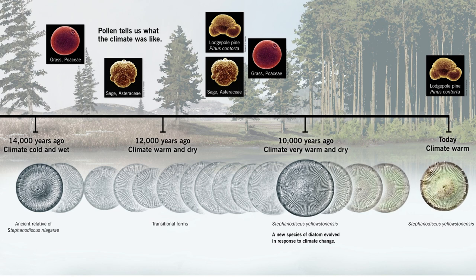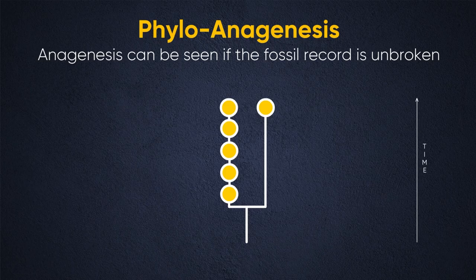In Yellowstone Lake, we see what starts out as a Niagara-type diatom, and then we see a beautiful transition. It gradually evolves — in the deeper sediments it looks like the Niagara specimen, and as we come towards more modern sediments it gradually evolves into the modern Yellowstone diatom. If you were to model this evolution, it would be a phyloanagenesis model — anagenesis on one line, and phylogenesis happening as well, because today we have the Niagara specimen alongside the modern Yellowstone form, with the transitional species in between.